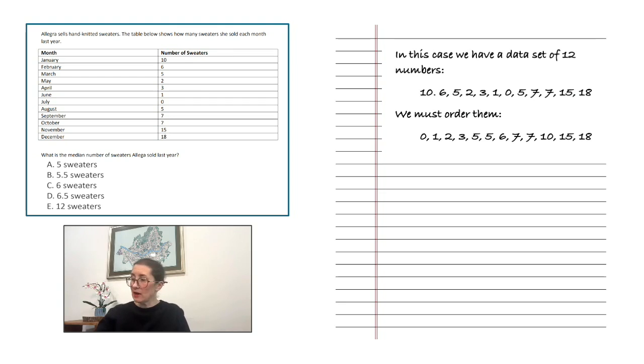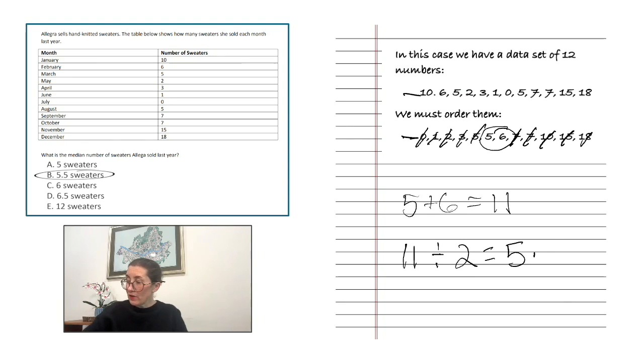In this case, we have a data set of 12 numbers, and we have to order them, as I've done here. In order to find the middle number, we will strike them off side to side until we get there. So in this case, we have 5 and 6, which we add together, and the sum is 11. We take the 11 and we divide it by 2, and our quotient is 5.5.